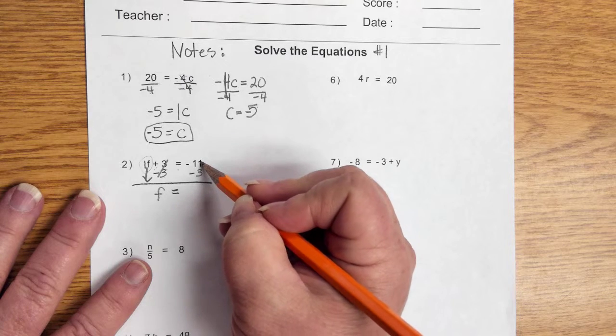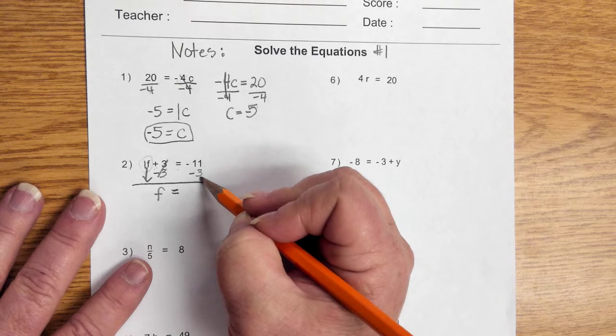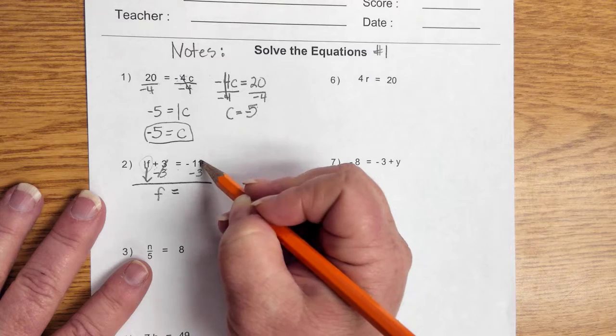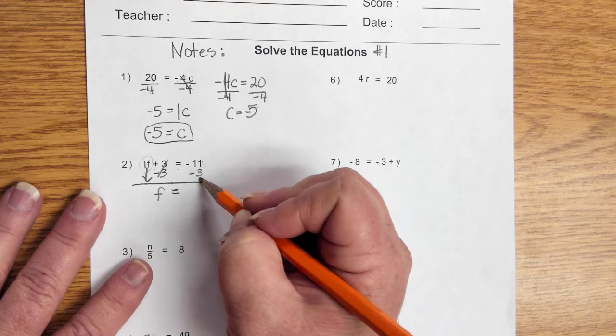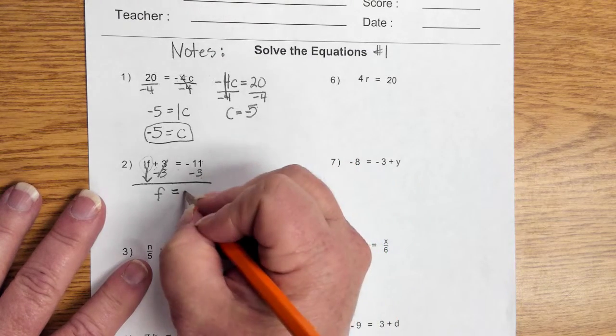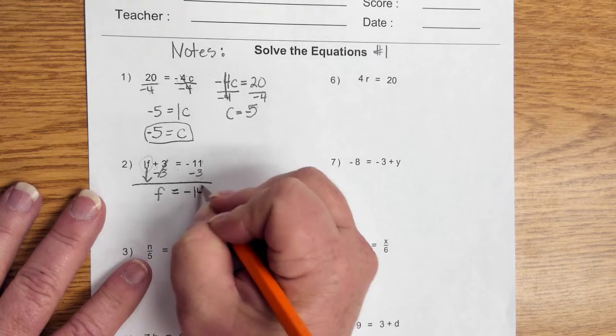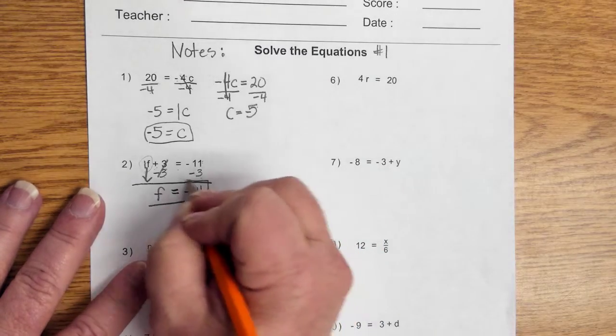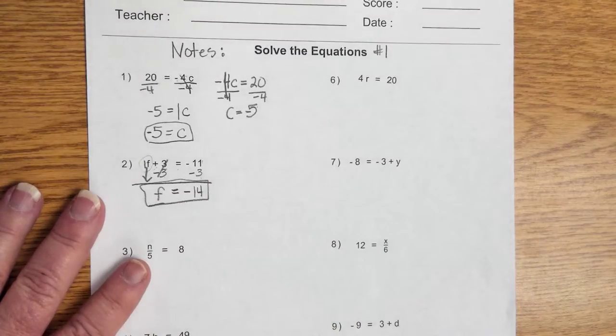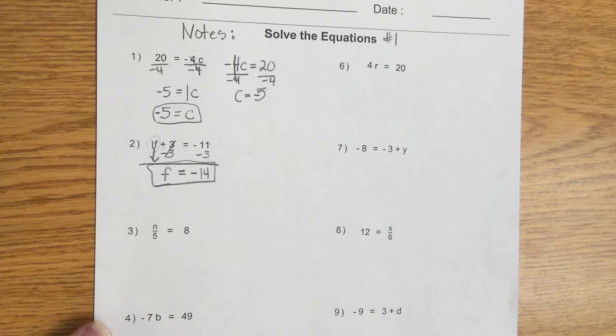We bring down our equal sign. And we have, essentially, a negative 11 combining with a negative 3, which is like negative 11 plus negative 3. So we're going to end up with negative 14. Please box your answers so they're easy for your teacher to find.